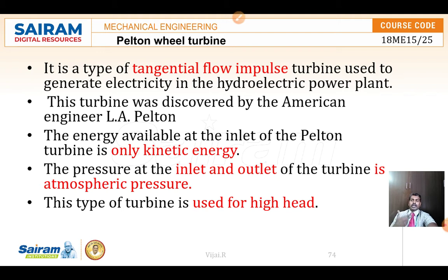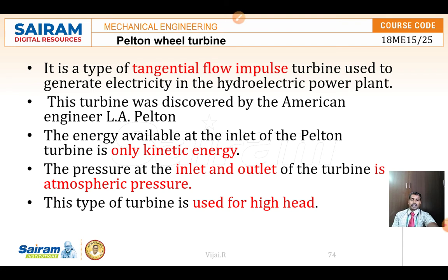In an impulse turbine, the water directly hits on the blades and causes rotation. The energy available at the inlet of the Pelton Wheel is kinetic energy. When water flows through the penstock from the dam reservoir, it is connected to the Pelton Wheel. The water hits on the turbine blades — the buckets — tangentially impacting on them.